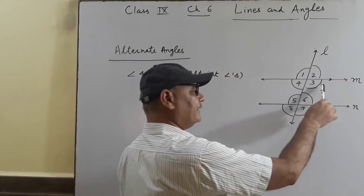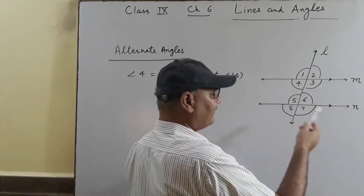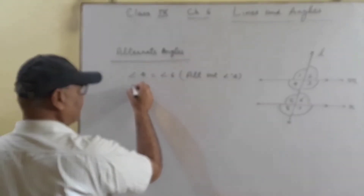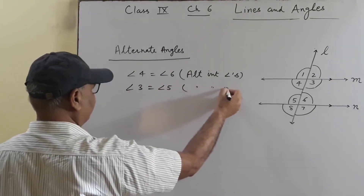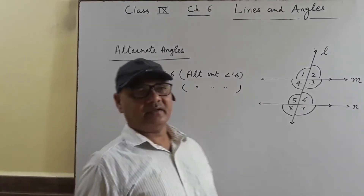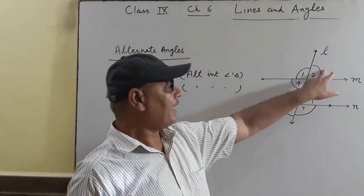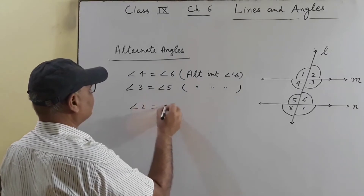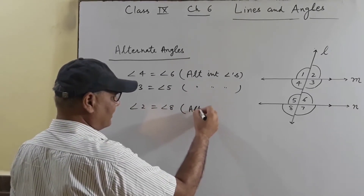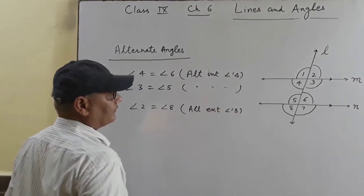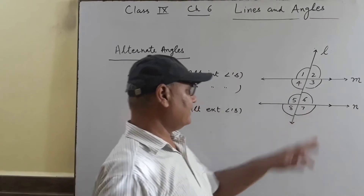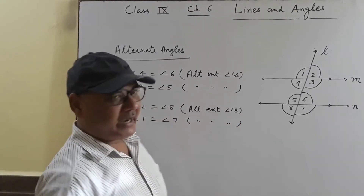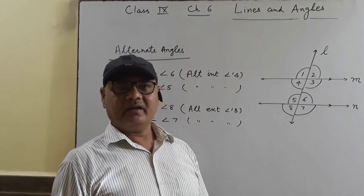Angle 3 is on the right side and angle 5 is on the left side, so angles 3 and 5 are alternate interior angles. For exterior alternate angles: angle 2 is exterior on one side, and angle 8 is exterior on the other side, so angle 2 equals angle 8. Similarly, angle 1 equals angle 7. The reason is that alternate exterior angles are equal when lines are parallel.